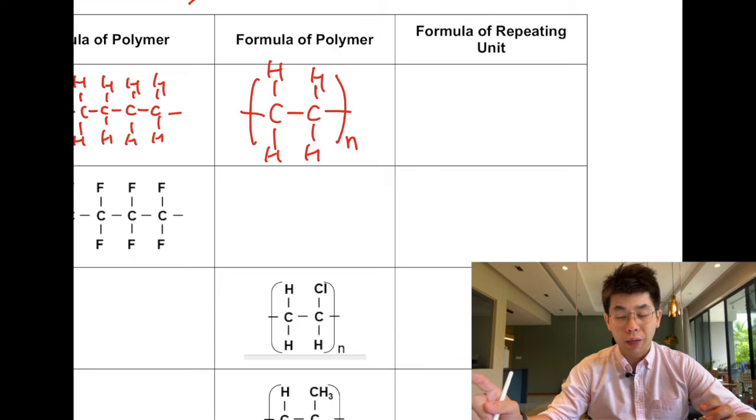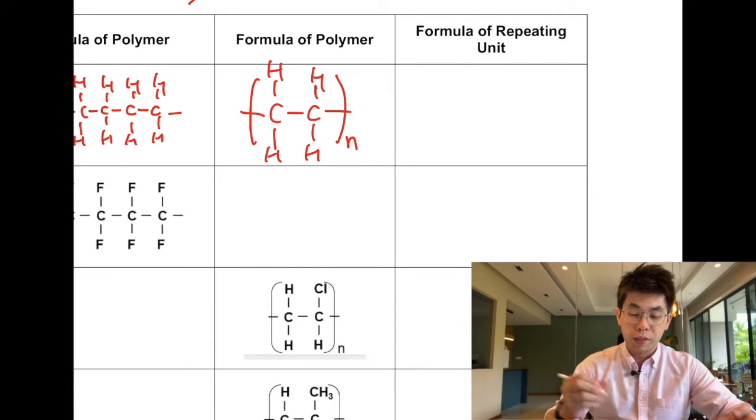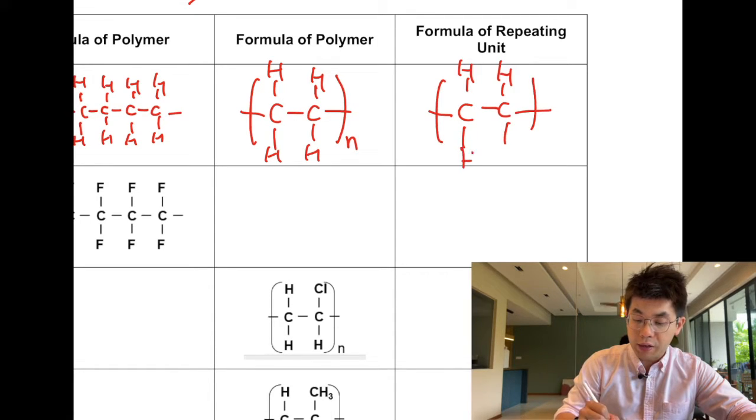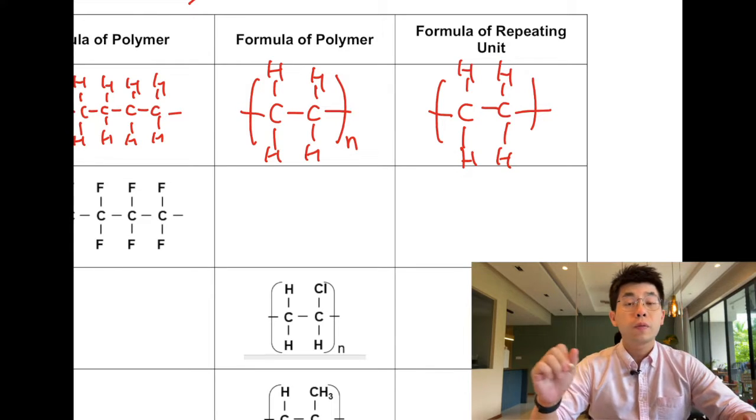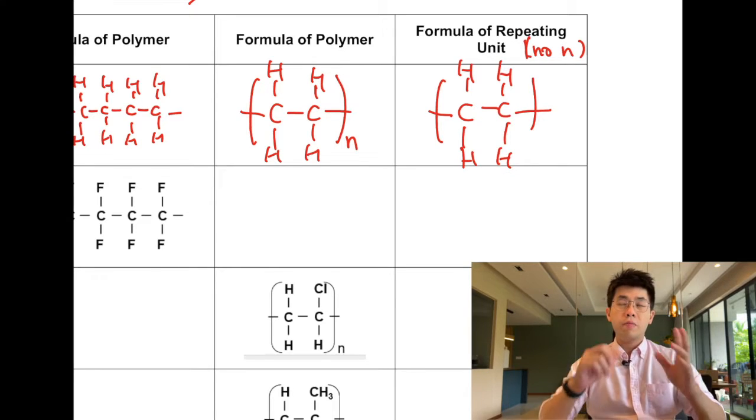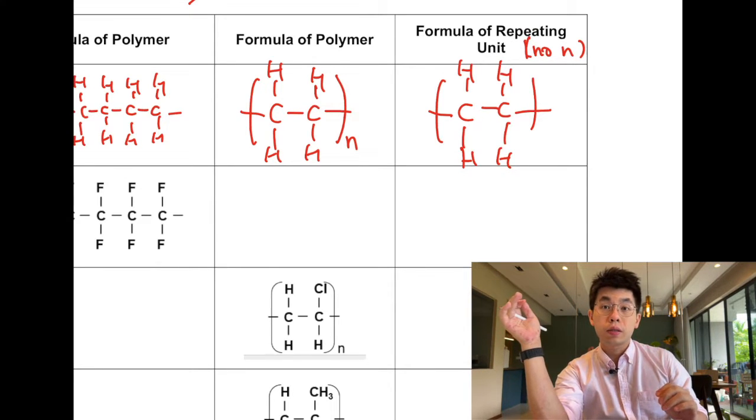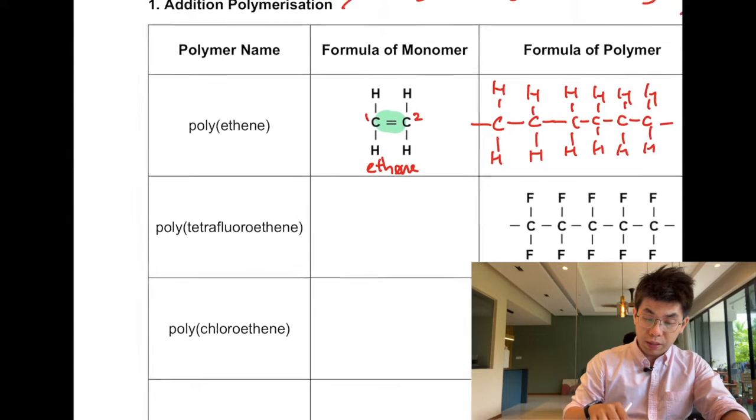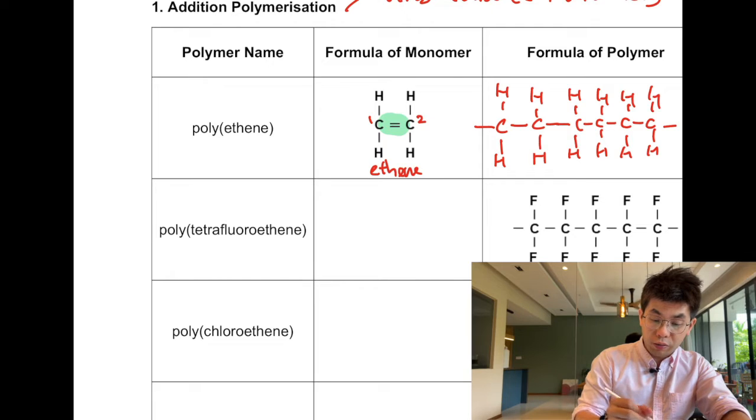The n shows that there are many units, but if I only want one repeating unit I will draw the same thing but without the n. Since this name is ethene, the name of the polymer would therefore be polyethene.